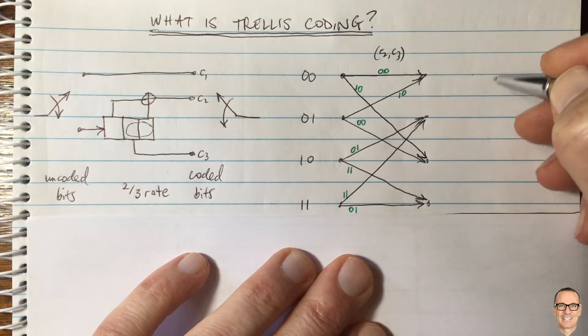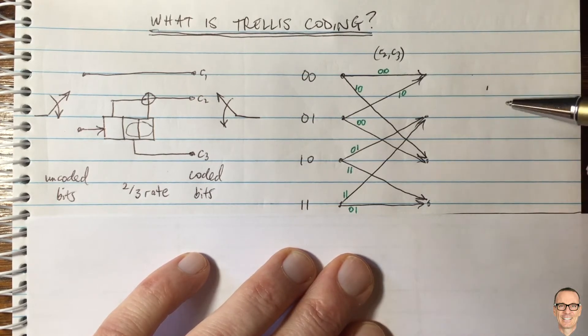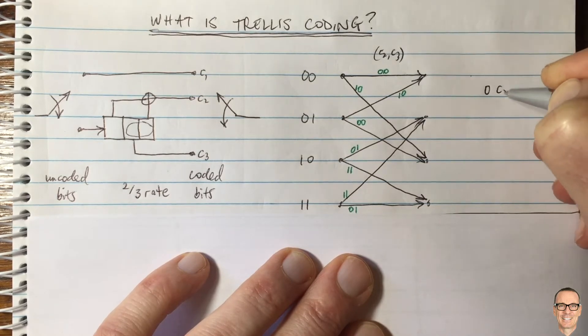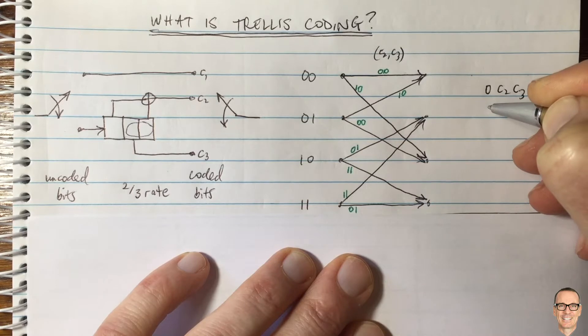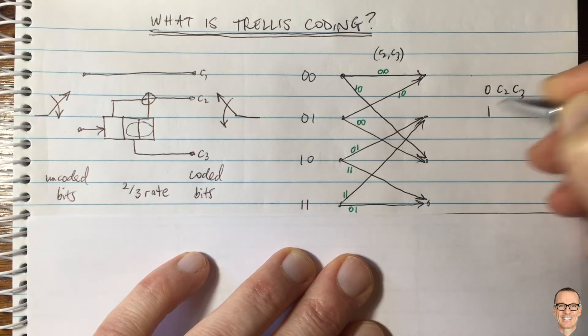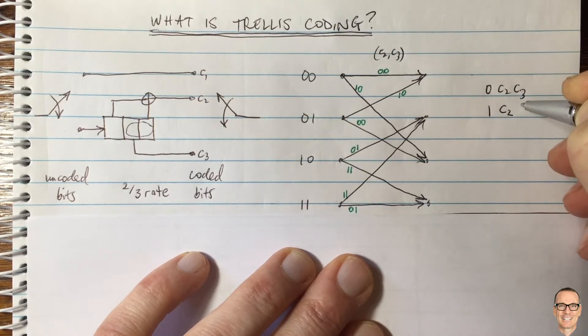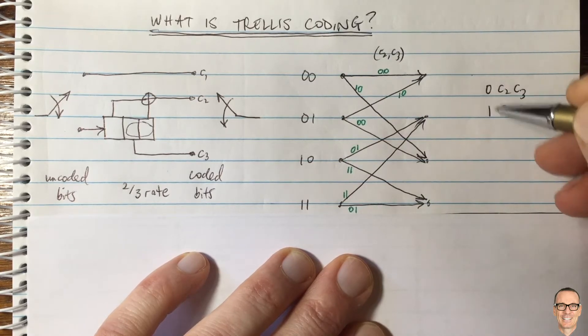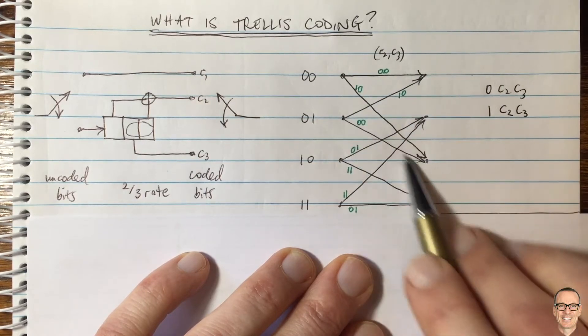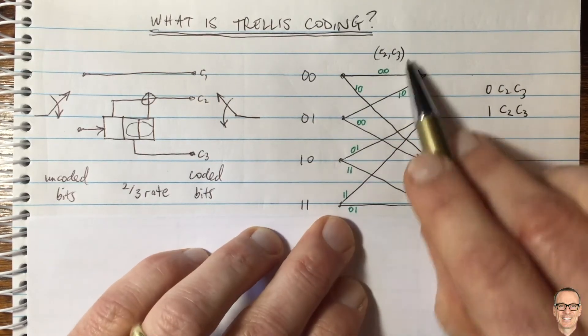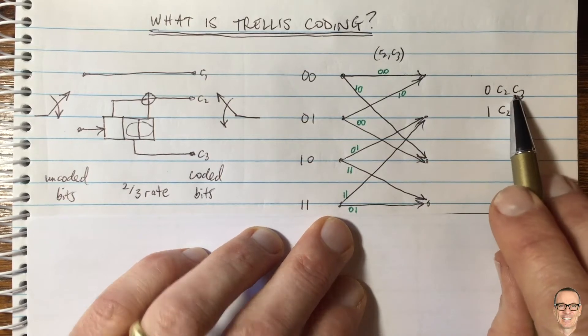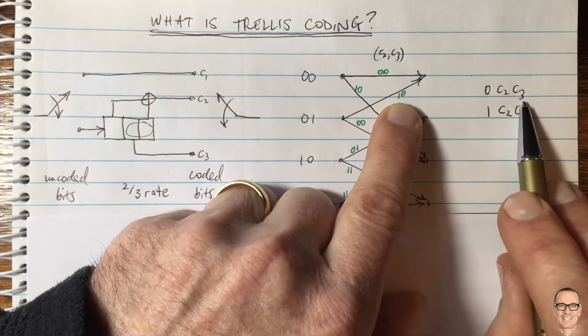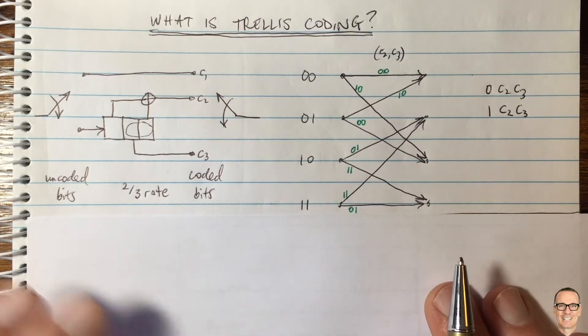So what we're going to say is we'd like in our mapping to our constellation points, we'd like to keep the zero and whatever C2 and C3 are far apart in our constellation diagram from the point which is mapped one and then the same C2 and C3. So these are going to be critical for every one of these paths here. There's two different branches, one of them for whichever value of C2 and C3 it is here, there'll be one that's zero and one that's one. Let's see what I mean about that.